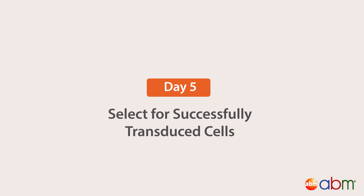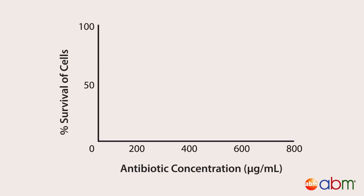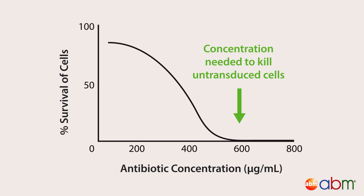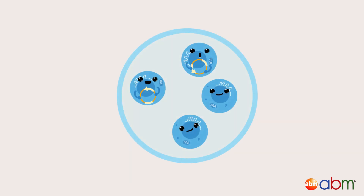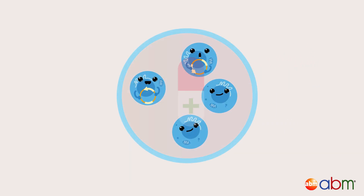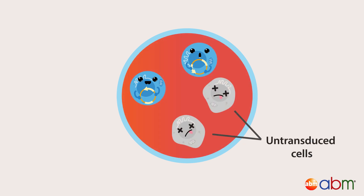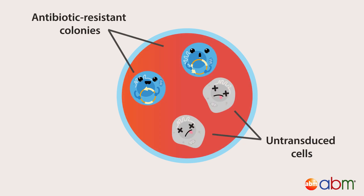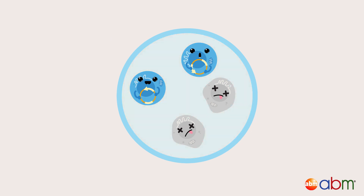Select for successfully transduced cells: successfully infected cells can be selected by adding the minimum concentration of antibiotic needed to kill untransduced cells, as determined by a killing curve. Maintain antibiotic selection until the control untransduced cells completely die and antibiotic-resistant colonies become visible. After this, you may reduce or remove the antibiotic from the culture medium.